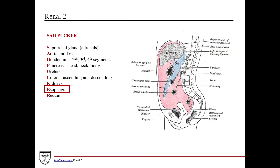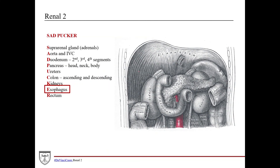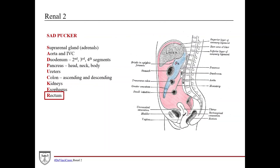E is for esophagus. The esophagus has a very short course in the abdomen, but it is actually retroperitoneal. You can see here the esophagus just poking its head through the diaphragm, making a small course to the posterior aspect of the stomach. And lastly, R is for rectum — as shown here, it is just posterior to the peritoneum.